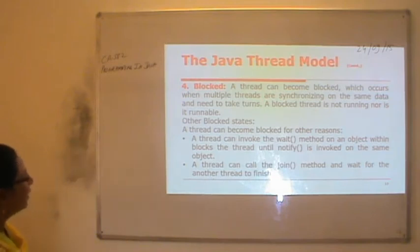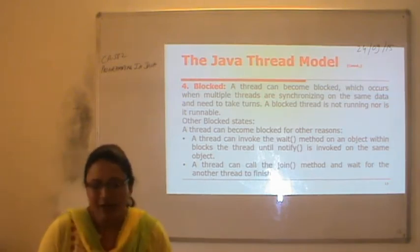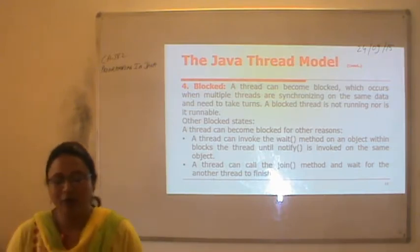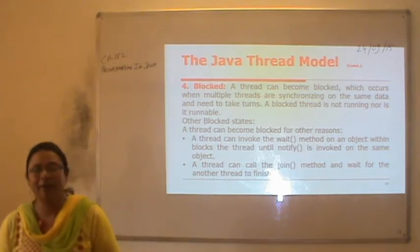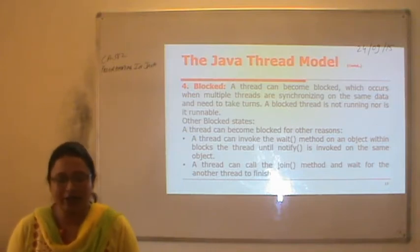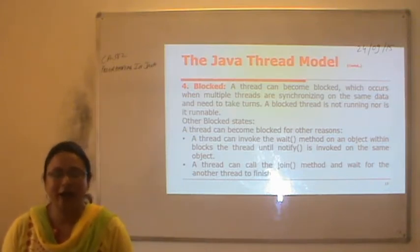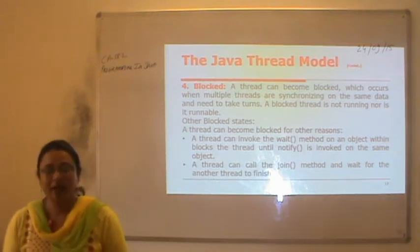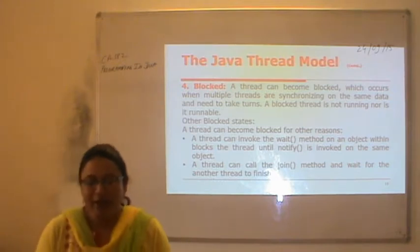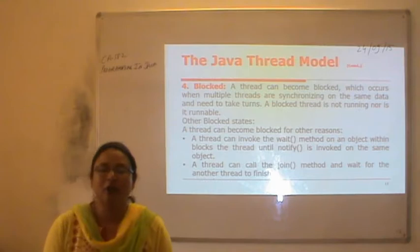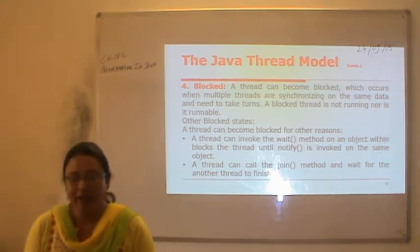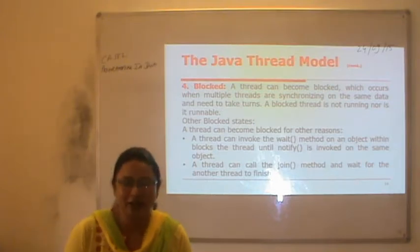A thread can become blocked for other reasons. For example, a thread can invoke the wait method on an object, blocking until notify is invoked on the same object. If a thread inside a synchronized block generates a wait message, all other threads must wait until the thread that generated the wait sends a notify. A thread can also call the join method and wait for another thread to finish its execution.